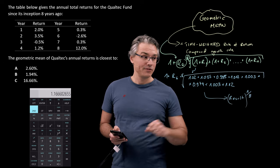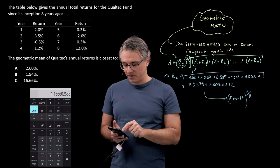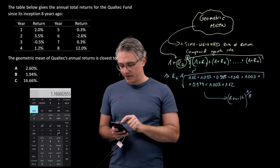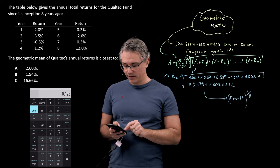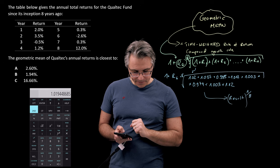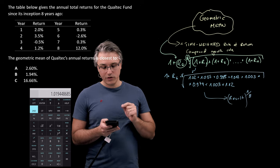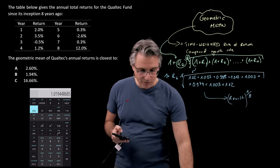Raise this to the power of 1 over 8. So press the y to the power of x button, open bracket, 1 divided by 8, close bracket, equals. As you can see, I've got a result here. And this result reads 1.01944.